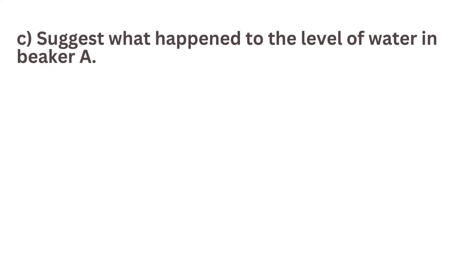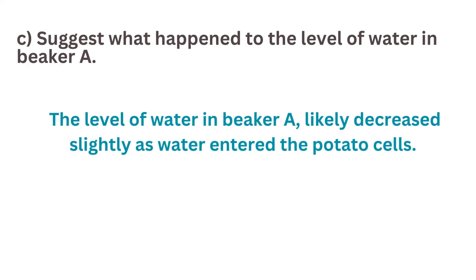C. Suggest what happened to the level of water in beaker A. The level of water in beaker A likely decreased slightly as water entered the potato cells.